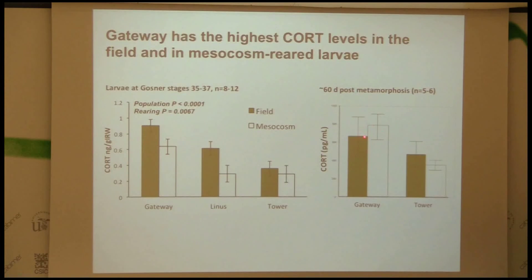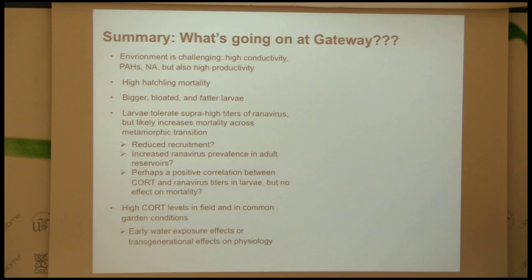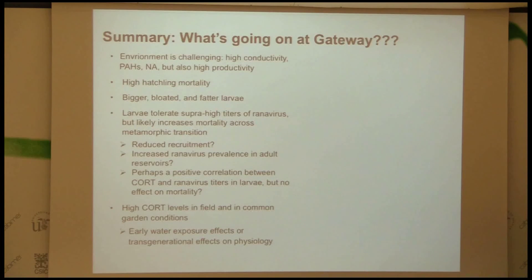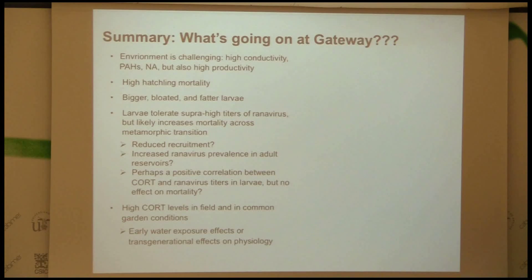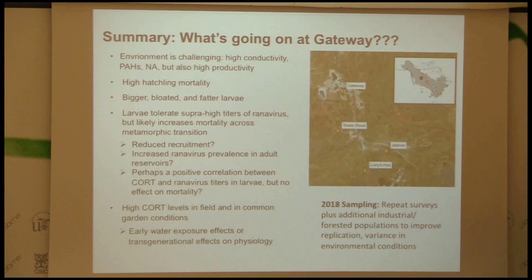At 60 days post-metamorphosis we had far fewer individuals that survived for comparison, but there was a similar trend. We think there could be super-high levels of ranavirus in ponds with the poorest water quality, yet animals there are fatter and may be able to compensate and harbor more virus — but we don't know whether that's a population sink. There's a whole bunch of ecology that needs to be done. We do know animals breed there every year, and there could be metapopulation dynamics sustaining that, though we don't know what happens to individuals that get out of those ponds.